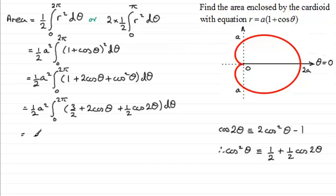If we integrate this now, we just put our half a squared there. If we integrate 3 over 2 with respect to theta that's 3 theta over 2. The integral of 2 cos theta is 2 sine theta, so we've got plus 2 sine theta. And then the integral of a half cos 2 theta is 1 quarter of sine 2 theta, going between the limits 0 to 2 pi.